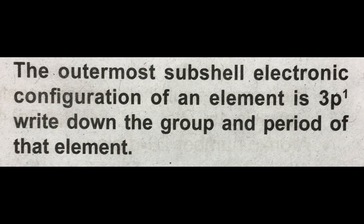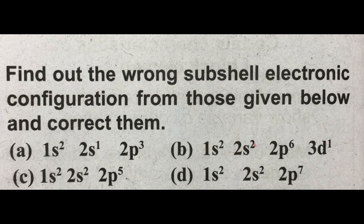The outermost subshell electronic configuration of an element is given as 3P1. From that, identify the group number and period number of that element — that is what is being asked. Question number 3: Find out the wrong subshell electronic configuration from those given below and correct them. You are given 4 elements' subshell electronic configurations and you must identify and correct the wrong ones.